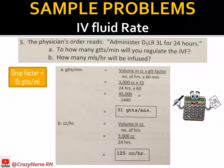For ml per hour, the formula is: volume in cc over number of hours. We have 3000 cc over 24 hours, which equals 125 cc per hour. So in every hour, 125 cc should be infused to our patient.